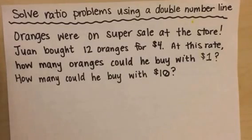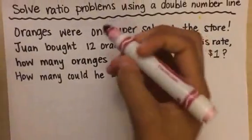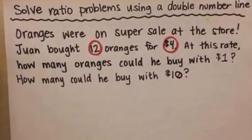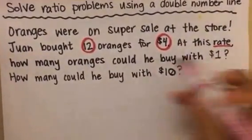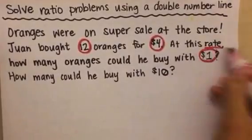Here we go. Oranges were on super sale at the store. Juan bought 12 oranges for four dollars. At this rate, how many oranges could he buy with one dollar? How many could he buy with ten dollars?